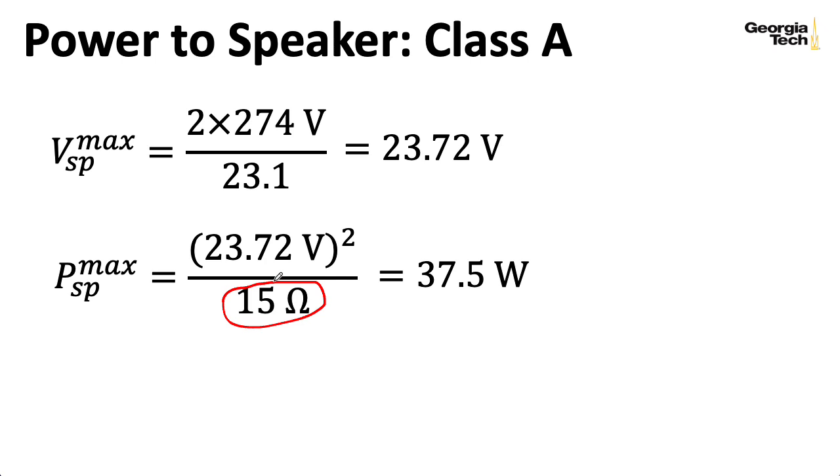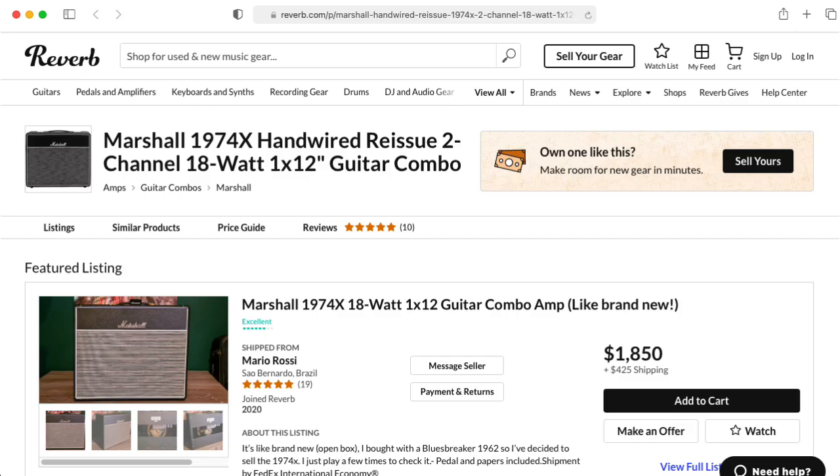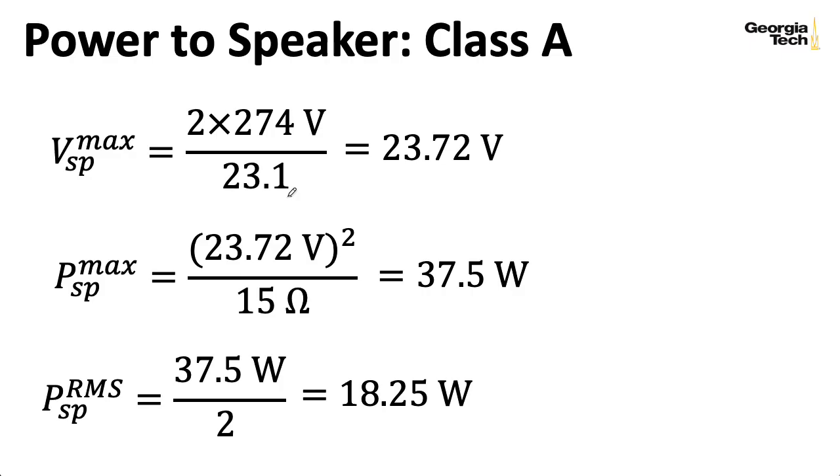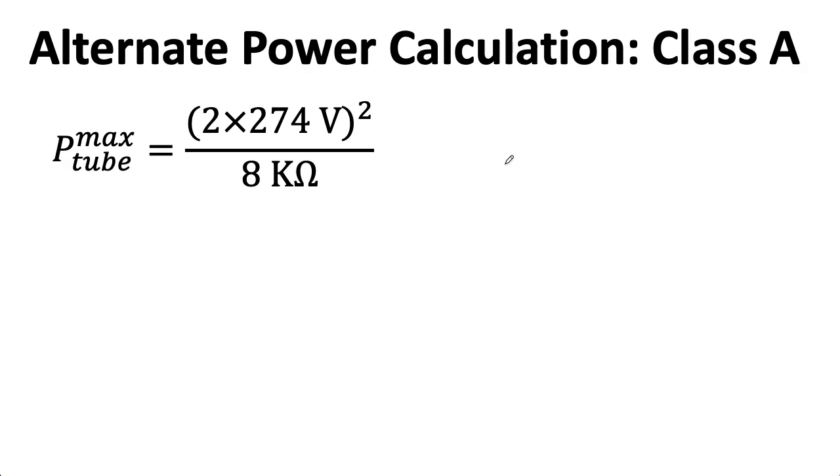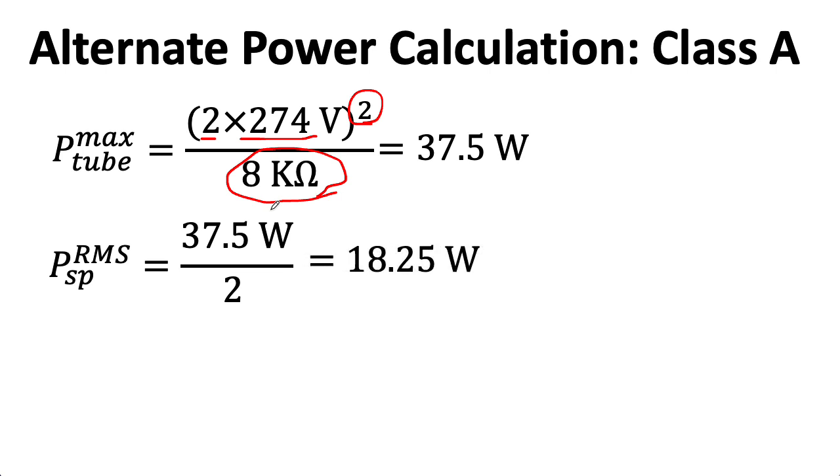And then to figure out the maximum power, I would square that and divide that by the impedance of the speaker, which is 15 ohms, giving me 37.5 watts. But that's peak. If we imagine putting in a sine wave and computing the RMS value, I need to divide that by two, which gives me 18.25 watts. And that's nice because it matches the name of the amplifier. I didn't actually have to use the turns ratio to do this computation. I don't have to look at the max voltage on the speaker side, although I do it because I think it's instructive to do so. We know that power is conserved across the transformer, so I can do the same calculation on the tube side. So here I can just square that twice of the 274 directly and then divide that by the plate-to-plate impedance. That gives me my 37.5 and dividing that by two gives me my 18.25.